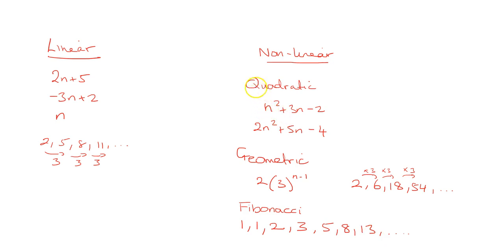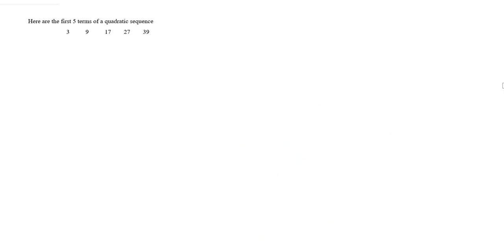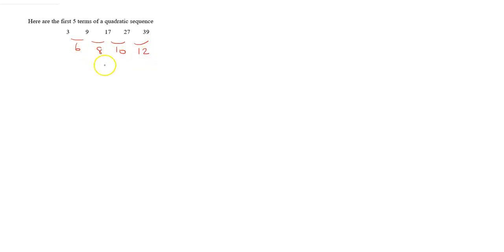I'm going to focus mainly on quadratics and then a geometric at the end. Starting with this quadratic sequence — the first five terms are 3, 9, 17, 27, and 39. The first differences are 6, 8, 10, 12. If these were all the same it would be linear. They're not, so we look at the second difference: 2, 2, 2. The second difference is constant, therefore this is a quadratic sequence.